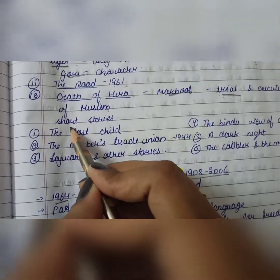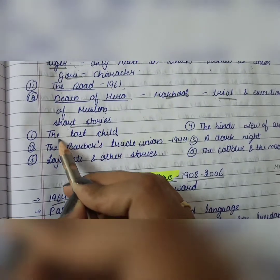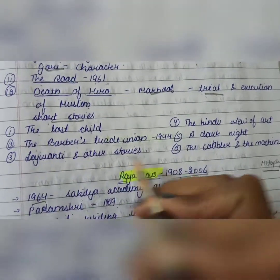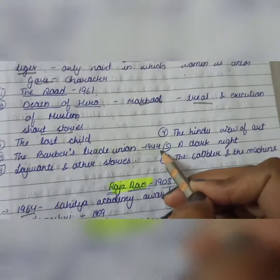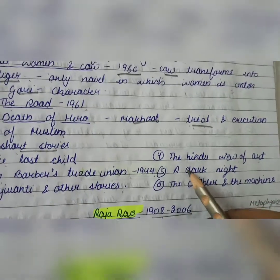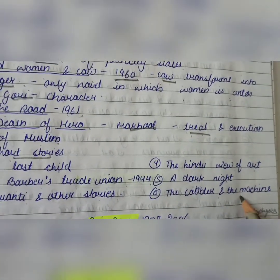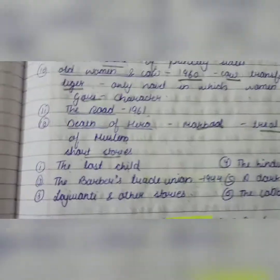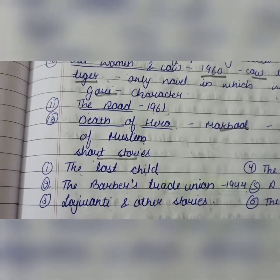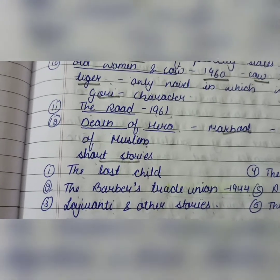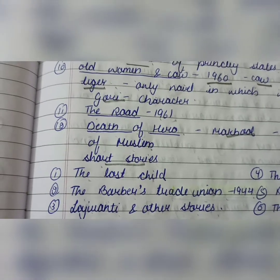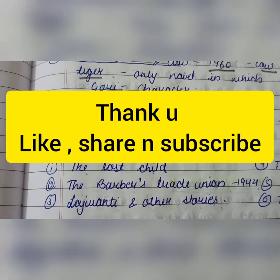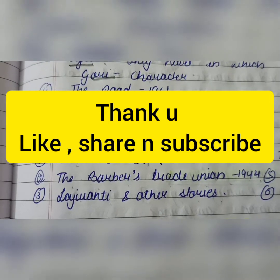There are also short stories written by Mulk Raj Anand — just remember the names: The Lost Child, The Barber's Trade Union and Other Stories (published 1944), The Hindu View of Art, A Dark Night, The Club Cobbler and the Machine. This covers all the important details about Mulk Raj Anand for your exam. Thank you very much — please stay home, stay safe, and take care. Please subscribe, share, and like the channel.